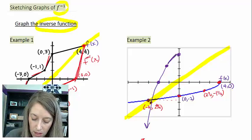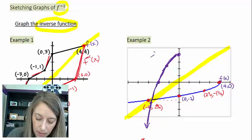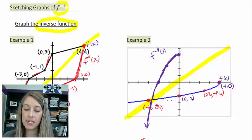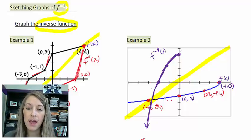So this is the graph of my f inverse of x. We can see it has the same basic shape except for it is reflected over the line y equals x.